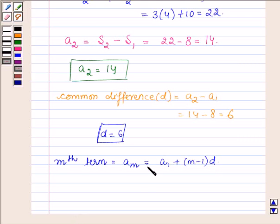We are given that the mth term is 164 and we have to find the value of m. So this is equal to a₁ is 8 + (m - 1)(6).